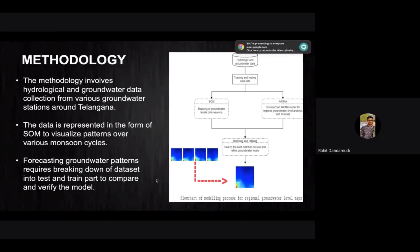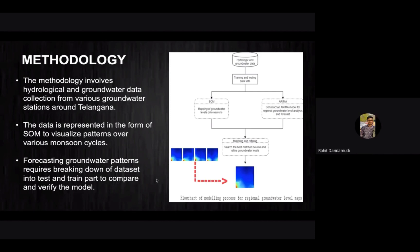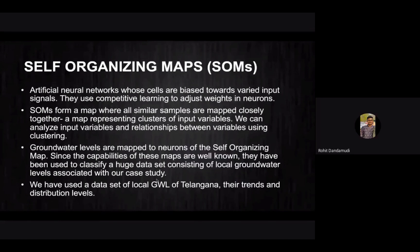Coming to the methodology, we have taken the groundwater data for the last decade from the years 2007 to 2017 from the Ministry of Water Resources official website for the state of Telangana. A lot of data pre-processing went into it to make the data clean and without any errors. Later on, we used a self-organizing map to visualize the patterns in the data and what categories it is divided into. We also used the ARIMA model to fit the data and predict it over the next few years. We have used both SOM and ARIMA together to match the best outcome needed. SOMs are basically 2D visual representations of the data showing how they are divided into different categories.